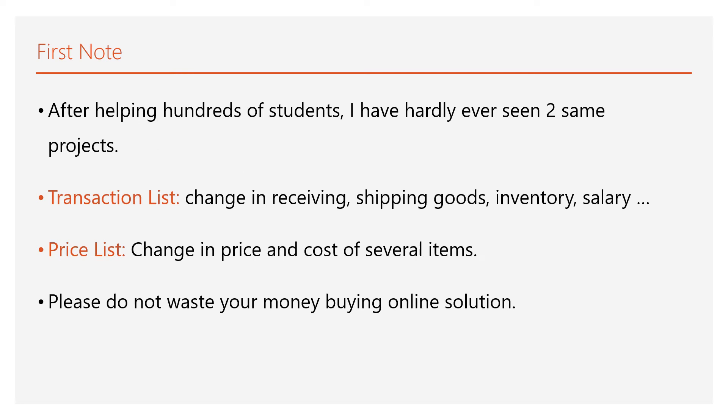For a side note, if you look through the transaction list, you will see that every single year — and sometimes every single semester — there is a change in the numbers for receiving goods, shipping goods, inventory, and salary. Those little numbers differ among transaction lists. And even in your own class, there should be section A or section B, sometimes even section C and D, that have different transaction lists.